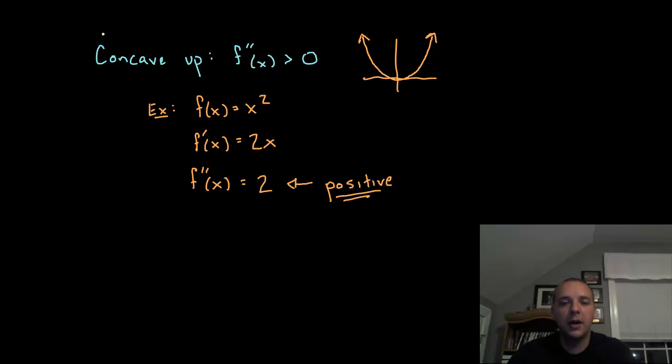Let's review briefly what concave up and concave down mean. A function is concave up where the second derivative is positive. Here's a simple example: if you take f(x) = x², the first derivative is 2x, and the second derivative is 2. Since 2 is always positive for every x, the graph of x² is always concave up. There are no x's where it's concave down because the second derivative is always positive.